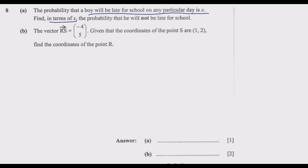We've been given that the probability the boy will be late for school equals x. Let x-complement be the probability that the boy will not be late for school, which is the opposite of being late. Remember when dealing with sets, the complement is what is not in that set. There are two possible events: either the boy is late or not late. If 70% of the time he is late, then 30% of the time he is on time.